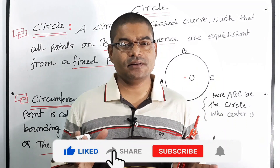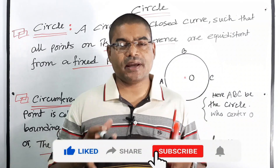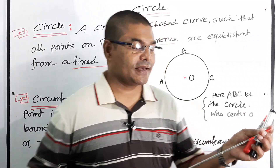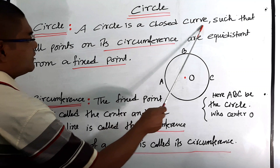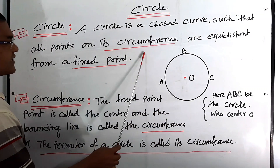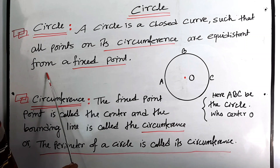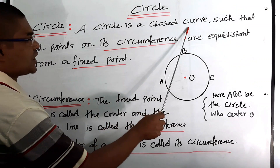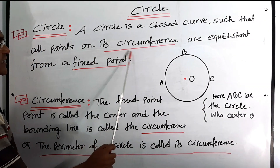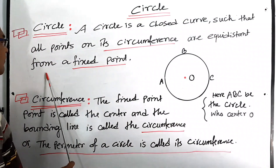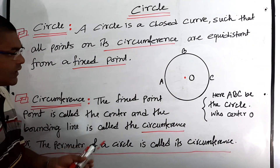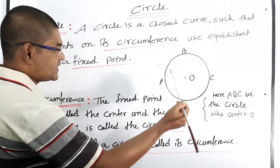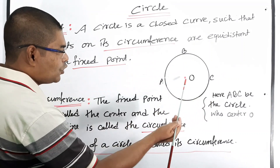Hello everybody, today I will teach you about circles. A circle is a closed curve such that all points on its circumference are equidistant from a fixed point. Here you can see O is the fixed point and this is the circumference. Here, ABC is a circle whose center is O.